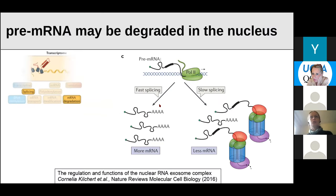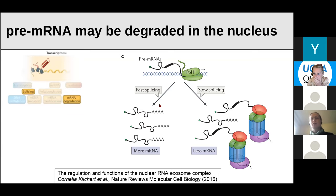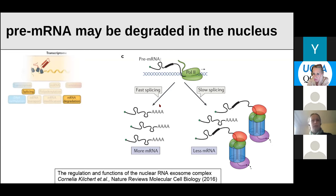There are also some works suggesting that pre-mRNA could be degraded in the nucleus, mostly by the exosome complex, and that could compete with splicing. For example, if some pre-mRNA splices more slowly, it will have more time to be targeted for degradation, and you'll end up with less mRNA. Compared to pre-mRNA that splices more rapidly, which won't be targeted for degradation, resulting in more mRNA.